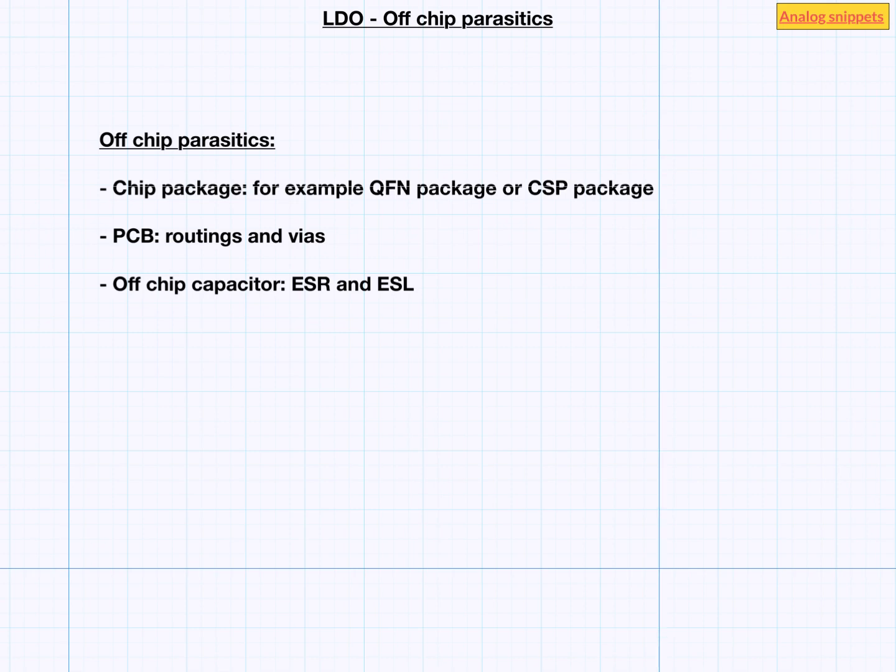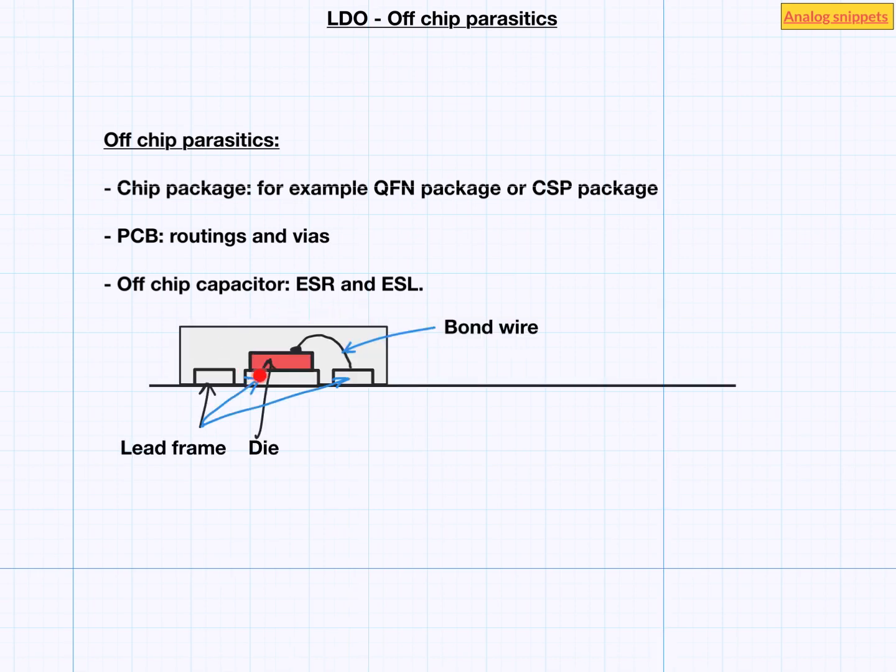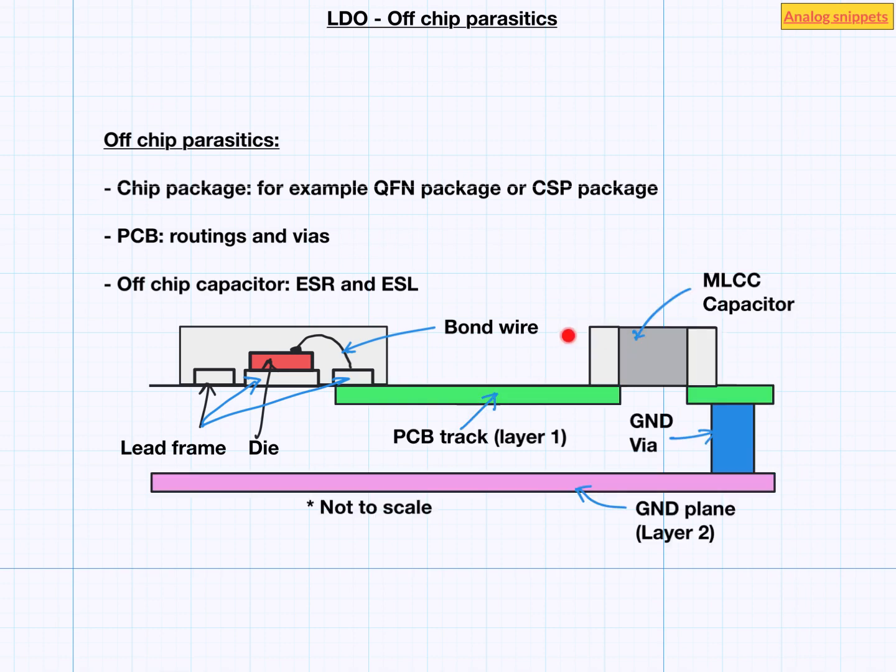To better visualize it, let's draw a cartoon with QFN package. In red here we have our die, which is mounted on a lead frame and bonded to lead frame through the bond wires. In green we have PCB tracks, which connects chips to the capacitor. Multi-layer ceramic capacitor or MLCC capacitors are one of the most popular form of capacitors used in PCB design. The other terminal of capacitor is connected to the ground plane through PCB via. Hopefully this cartoon gives you a physical feel of what are the components which are involved.